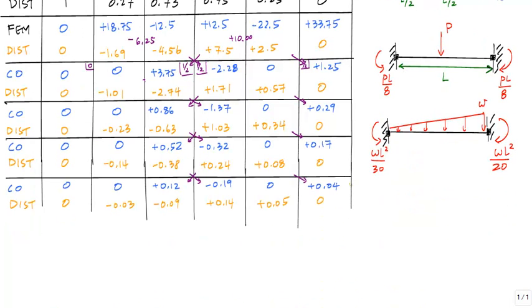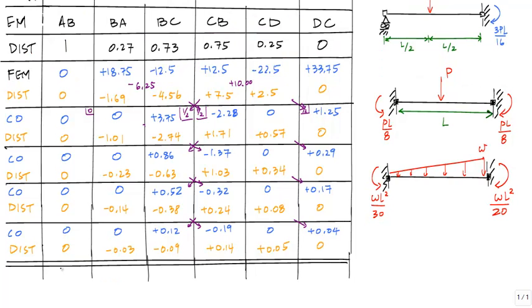So now I think that my carryovers and my distributions have become small enough that I can add up the columns. One thing to make sure you don't do is do not stop on a carryover, otherwise you'll end up summing the columns and get a mismatch in moments. And you'll question your process, which is wrong. So here, let's go ahead and sum up the columns. So when I go ahead and I sum up the columns, I will get that the end moment AB is 0.